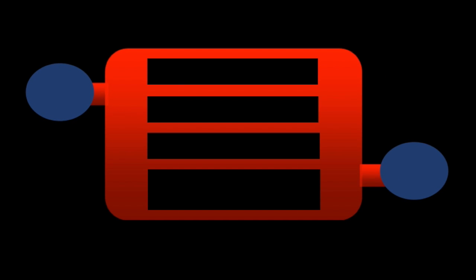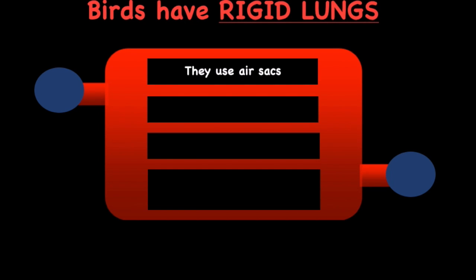Okay, so to sum it up, birds have rigid lungs, which is why they use air sacs, or a bellow system, to circulate air through their lungs.